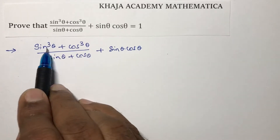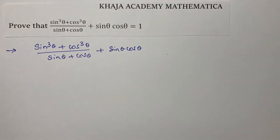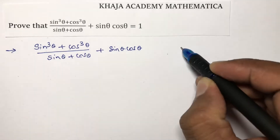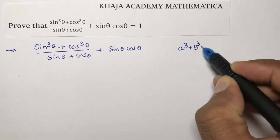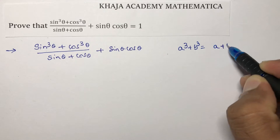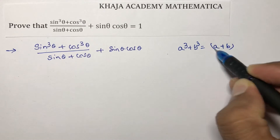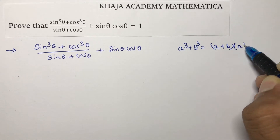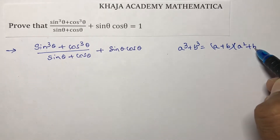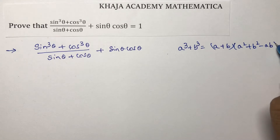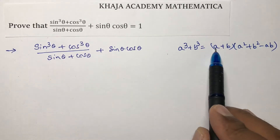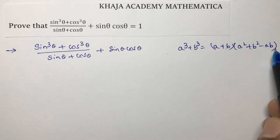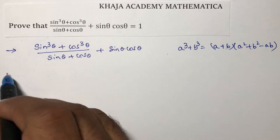So here it is in the form of a³ + b³. The formula is: a³ + b³ = (a + b)(a² + b² - ab).